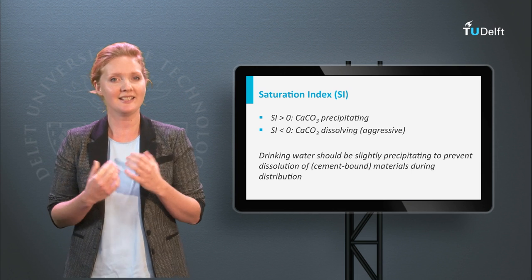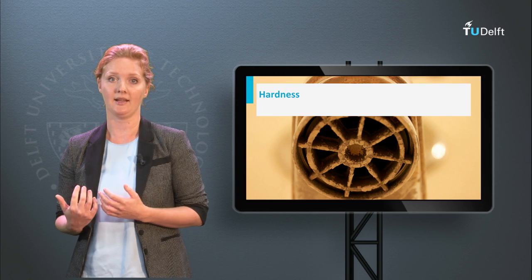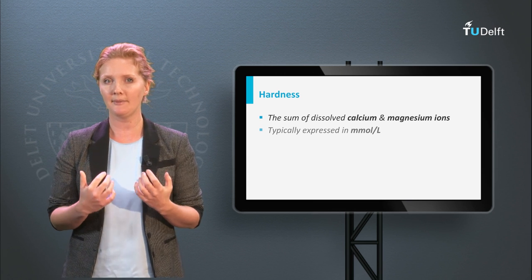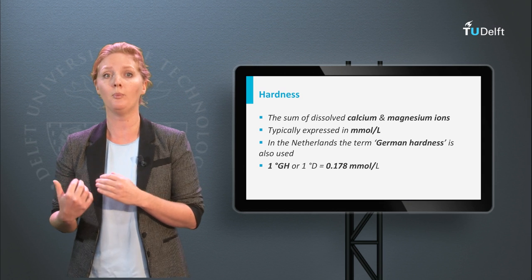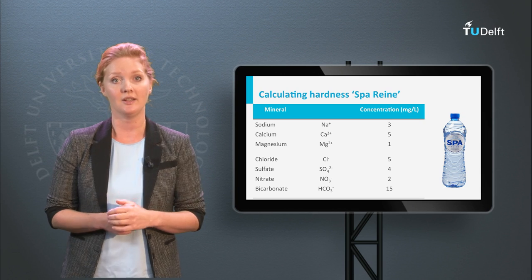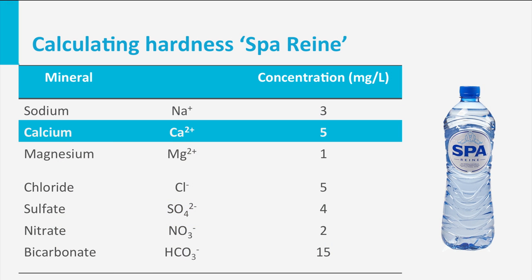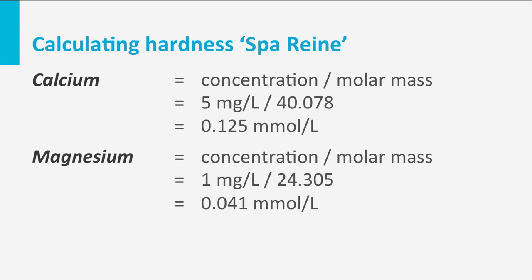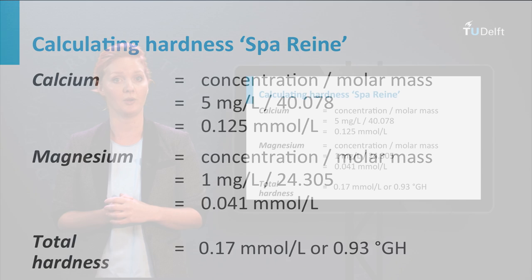For drinking water, it is preferred to have water that is slightly precipitating to prevent dissolution of materials during distribution. Apart from pH and the saturation index, also the hardness of water is of importance for scaling potential. Hardness is the sum of calcium and magnesium ions in water, typically expressed in millimoles per liter. The term German hardness is also used — one degree German hardness equals 0.178 millimoles per liter. The last exercise of this lecture is to calculate the hardness of mineral water as depicted in the table. For calcium, this equals 0.125 millimoles per liter, and for magnesium, 0.041 millimoles per liter, amounting to a total hardness of 0.17 millimoles per liter, or 0.93 degrees German hardness.